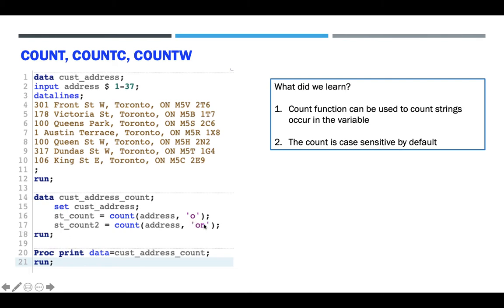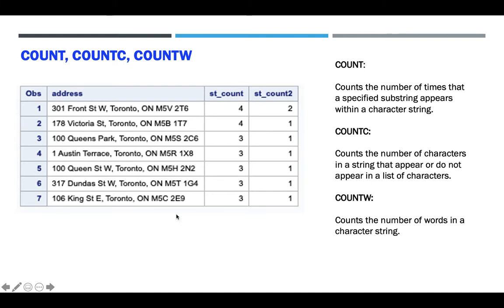On line number 17, we try to match the substring 'on'. In 'Front' you have 'on', and in 'Toronto' you also have an 'on', so this will return 2. You can see the results on the next page: you have 4 for the first count and 2 for the second. So COUNT is used to count the substring.